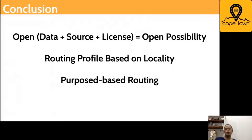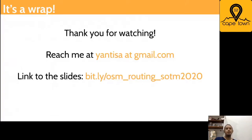This is a really interesting possibility that comes from combining open data — which is OpenStreetMap — with open source routing engines. The open data and the license enables you to do lots of experimentation without having to worry about paying large amounts of money. Thank you for watching, you can reach me at the email provided, and there's also a link to the slides if you want to download them and try your own routing experiments in your area. Surely we can discuss afterwards — thank you and have a nice day.